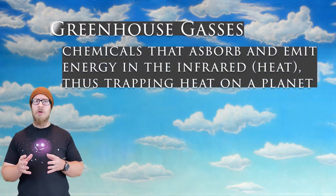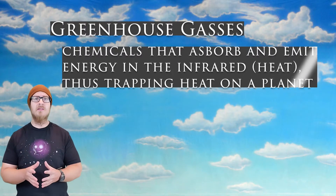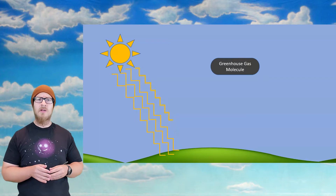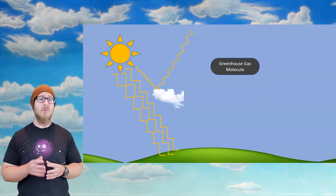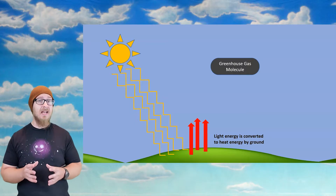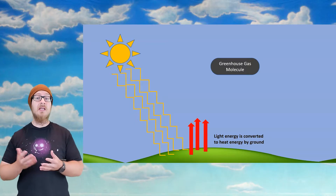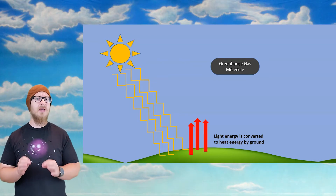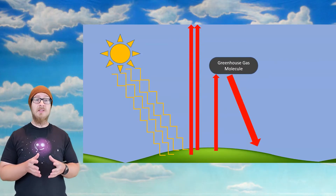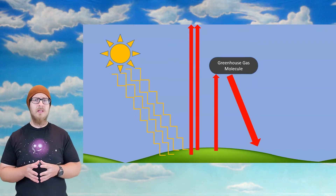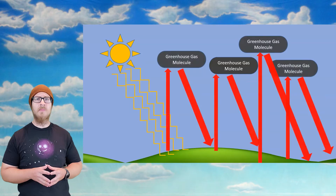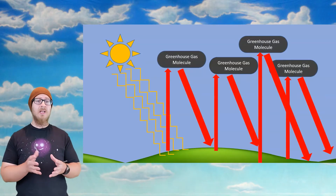Greenhouse gases absorb and emit energy in the infrared, which is heat. The sun's light passes through the atmosphere more or less undisturbed. When the sunlight hits the Earth's surface, the light energy is absorbed and radiated back up as heat. This infrared radiation continues to travel up, at which two things can happen: the heat may escape the atmosphere, or the infrared radiation can be absorbed by a greenhouse gas, thus trapping the heat inside the atmosphere. The more greenhouse gases are present, the more heat is trapped.